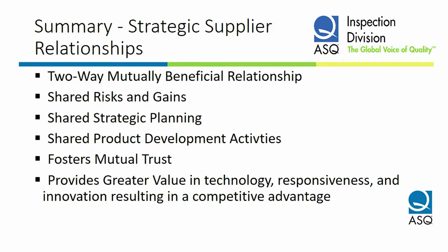Finally, a summary of the strategic supplier relationship — it's a two-way, mutually beneficial relationship. We want to make sure that it's transparent; we both understand where we're going, what we're doing, and what we expect as growth in the future. There's shared risk and there's shared gain. We're sharing strategic planning and product development activities. We're planning on releasing this new product mix — do you have the capabilities, equipment, and people to support that need? We want to foster a mutual trust. They can come into our facility, we can come into theirs. We want to solve problems openly and honestly and provide greater value in technology, responsiveness, and innovation, resulting in a competitive advantage for your organization.